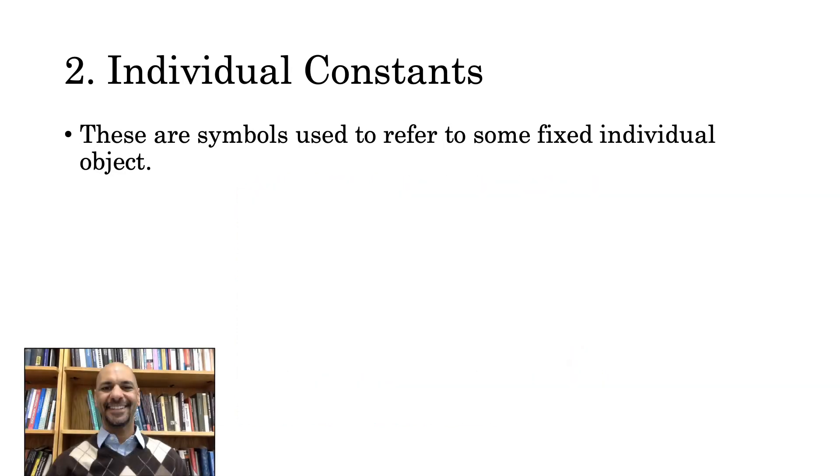The individual objects to which individual constants refer can be quite varied. For instance, they might refer to people, like me. Unlike English, we don't capitalize names in first order logic. So, you see that I write my name in first order logic with a lowercase k.